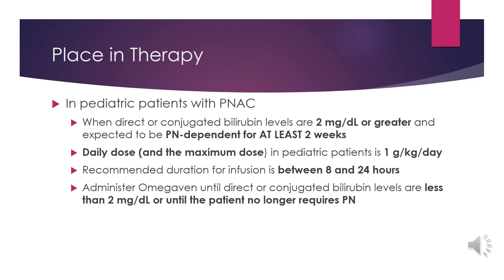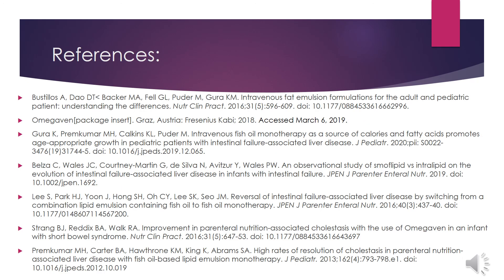To bring this information together, the place in therapy for Omegaven is in pediatric patients with parenteral nutrition-associated cholestasis when direct or conjugated bilirubin levels are 2 mg/dL or greater and patients are expected to be parenteral nutrition-dependent for at least 2 weeks. The daily and maximum dose in pediatric patients is 1 g/kg/day, infused over 8 to 24 hours. Administer until direct or conjugated bilirubin levels are less than 2 mg/dL or until the patient no longer requires parenteral nutrition. I hope this presentation has helped with the proper use of Omegaven.